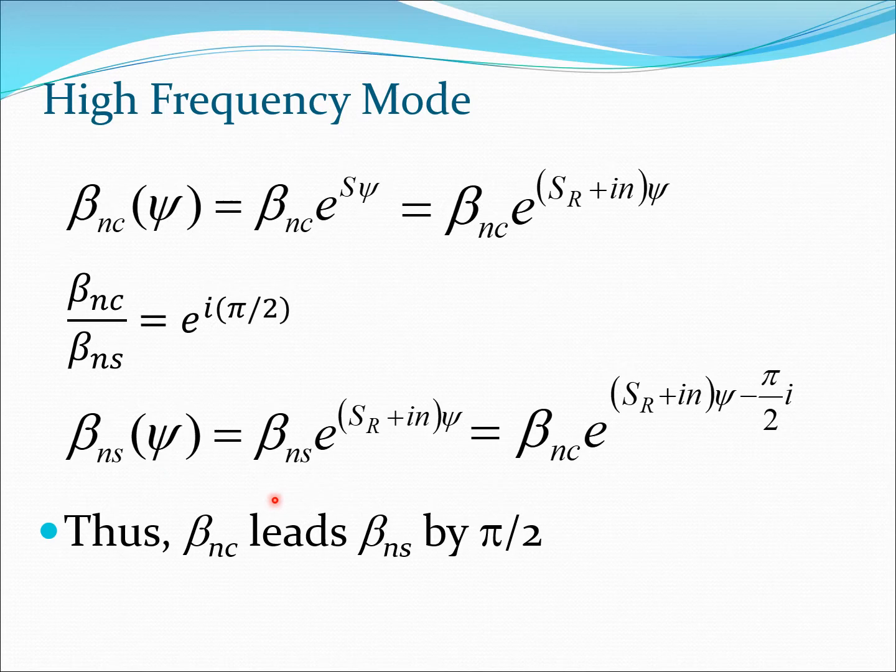Similarly, beta NS could be expressed in terms of beta NS e to the power SR plus IN psi in exactly this manner. Now by using this relationship between beta NC and beta NS, I can write this term in terms of beta NC. So beta NS would be beta NC by e to the i pi by 2. I substitute that here, and this negative pi by 2i goes into this expression here. Therefore I get a relationship between beta NS and beta NC. Here we clearly see that beta NC leads beta NS by pi by 2.